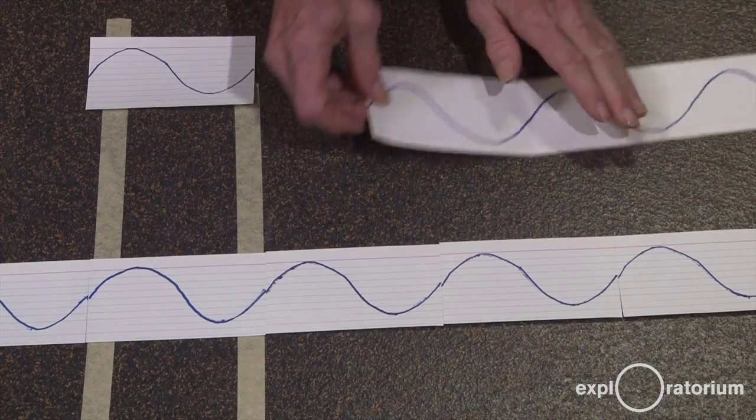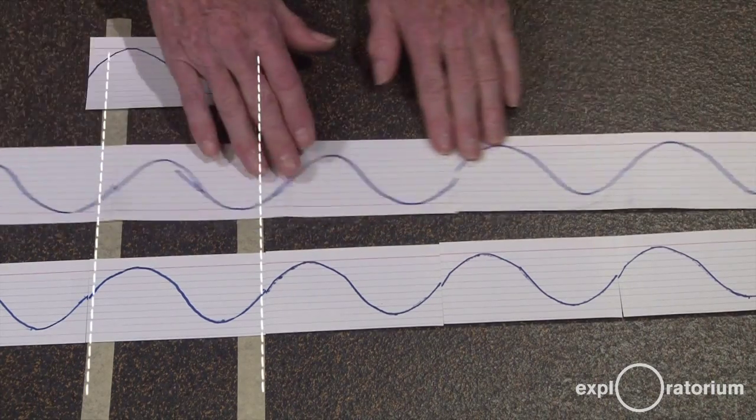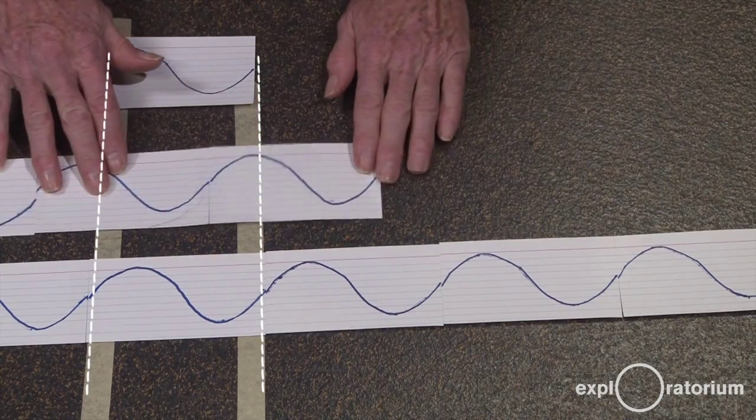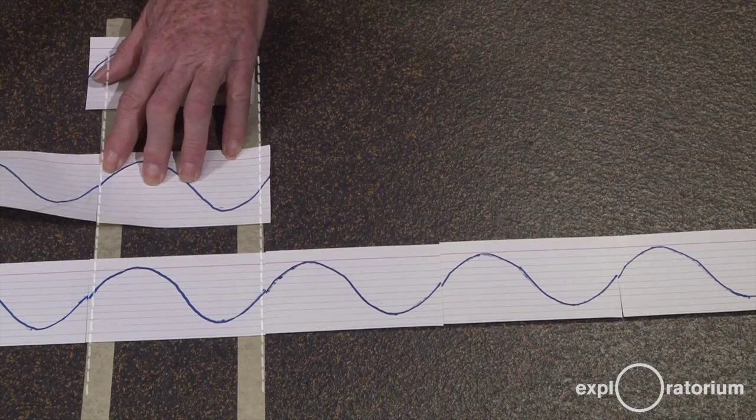Now let's see what happens to the light that comes in and reflects off the back surface of the soap film. So I run my light through until it reaches the back surface of the soap film and then I fold it over.